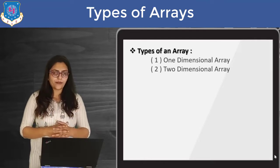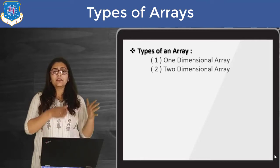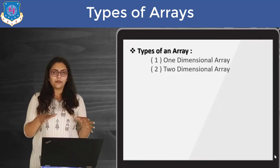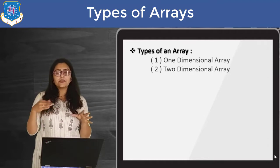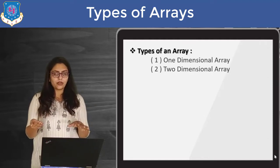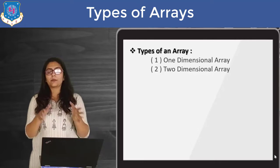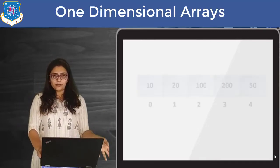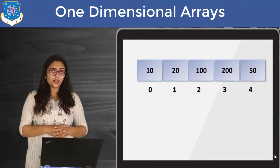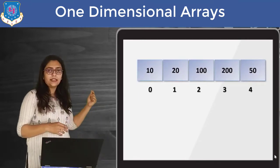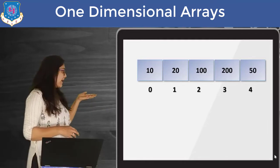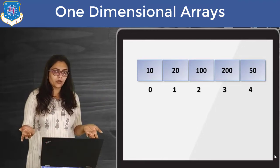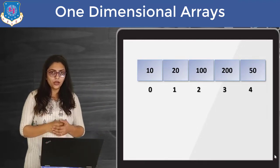Basically, there are two types of arrays commonly used: one dimensional and two dimensional. If someone asks about multi-dimensional arrays, you can represent a two dimensional array as a multi-dimensional array as well. In a one dimensional array, you just need a single index to identify one particular value. So if I say A[2], then 100 will be identified — a single value can be identified uniquely.